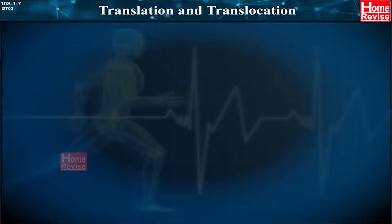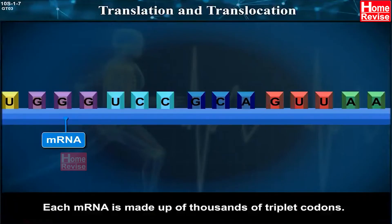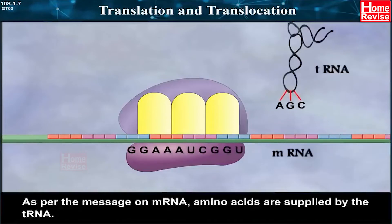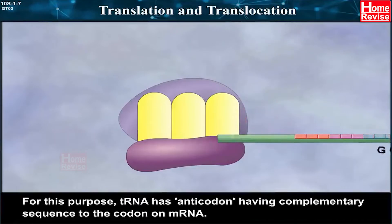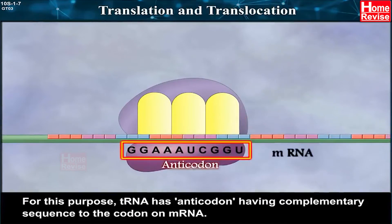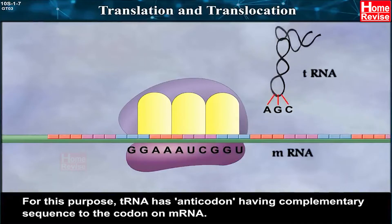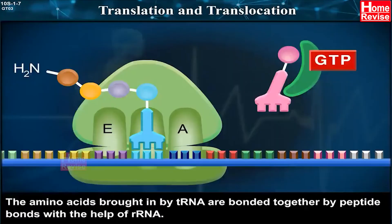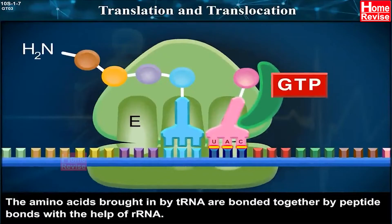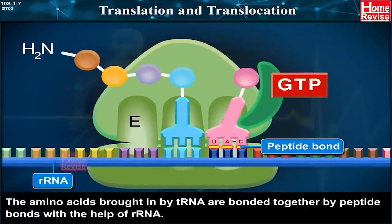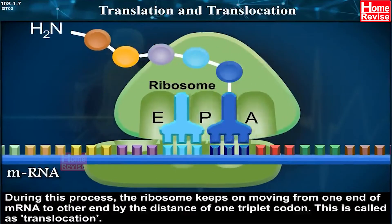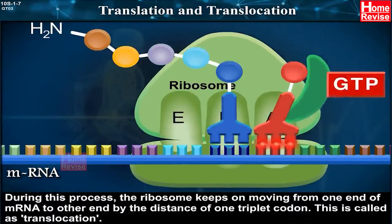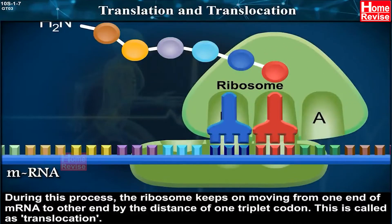Translation and Translocation. Each mRNA is made up of thousands of triplet codons. As per the message on mRNA, amino acids are supplied by the tRNA. For this purpose, tRNA has an anticodon having complementary sequence to the codon on mRNA. This is called translation. The amino acids brought in by tRNA are bonded together by peptide bonds with the help of rRNA. During this process, the ribosome keeps moving from one end of mRNA to the other by the distance of one triplet codon. This is called translocation.